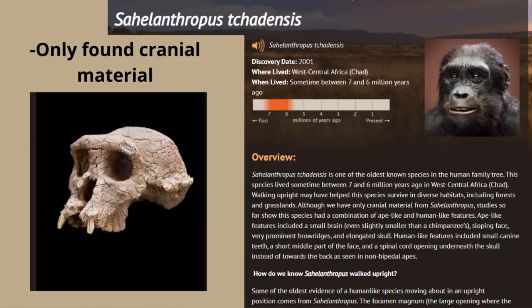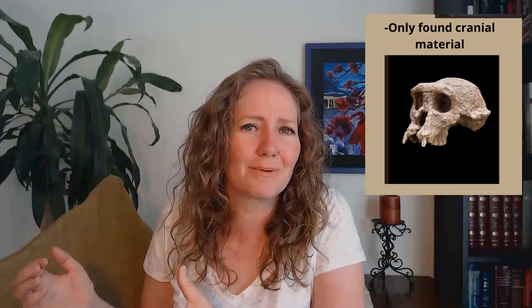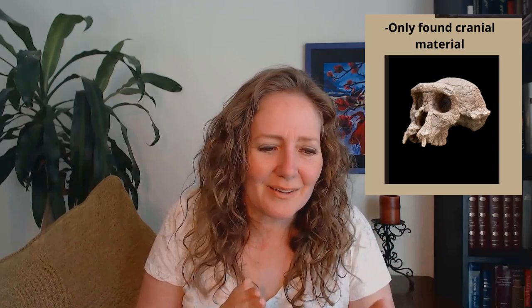Sahelanthropus tchadensis is supposedly one of the oldest human ancestors, and all that we've found of this is this part of the skull. It says on the Smithsonian website that 'walking upright may have helped the species survive.' So they're making a guess — they're saying it may have walked upright based on the fact that the spinal cord opening is positioned a little more below the head than at the back. So it could have walked upright, but again, this is complete guesswork because this is all we have. Is this really an ape-like creature transitioning to be human? Or is this just an ape? I believe this one is just an ape.